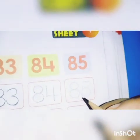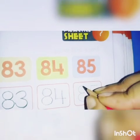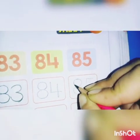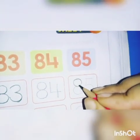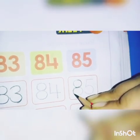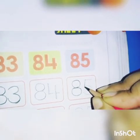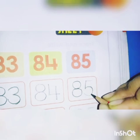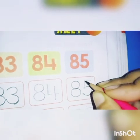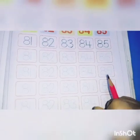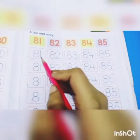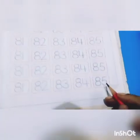Then go for the next one. Here we have the last number of this page, 85. Start your work. We complete this page from the first box of 81 till the last box of 85.